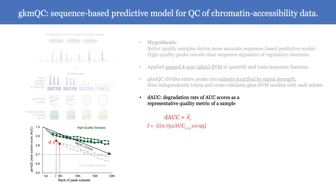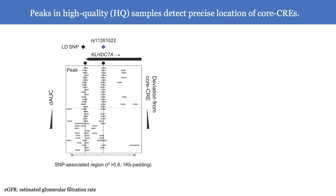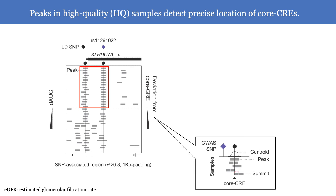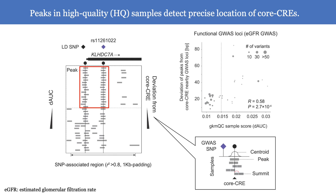We found that GKMQC captures how open chromatin peaks precisely specify the genomic location of core regulatory regions. Looking at the functionally relevant GWAS locus in KLHDC7A, which is fine-mapped by EPIMAP with eQTL co-localization, we can see 17 high-quality samples of developing kidney that maximize the aligned mapping of peaks proximal to the locus. In this context, the core regulatory region is the centroid of aggregated peaks across samples, and we confirmed the same trends across multiple peaks and functional GWAS loci with statistical significance.